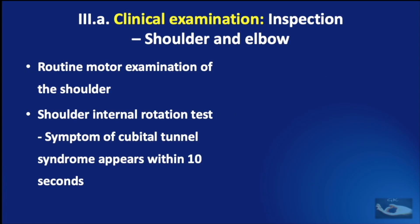When we begin the clinical examination, we begin with the inspection of the shoulder and elbow. A routine motor examination of the shoulder should be done to rule out other involvement, such as can occur in a brachial plexus injury. The shoulder internal rotation test is then performed.